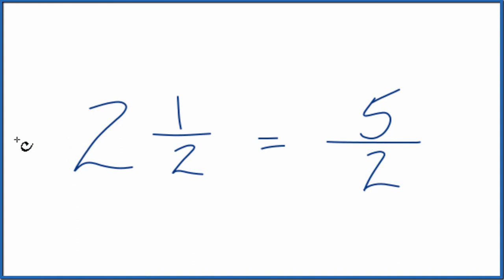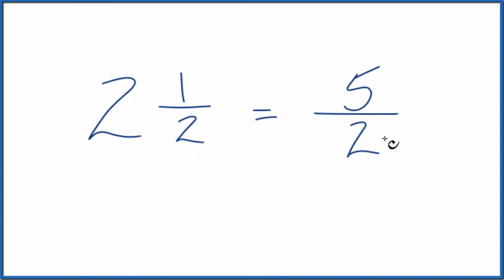So the mixed number 2 and 1 half equals the improper fraction 5 halves, or 5 over 2.